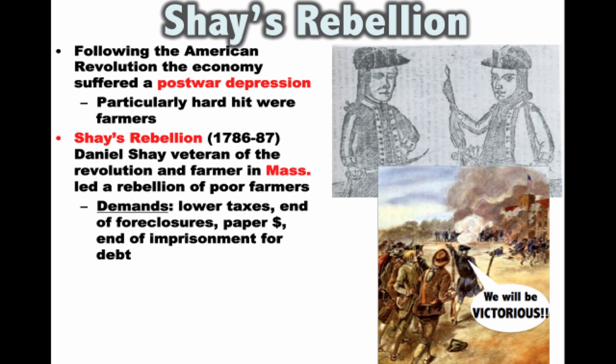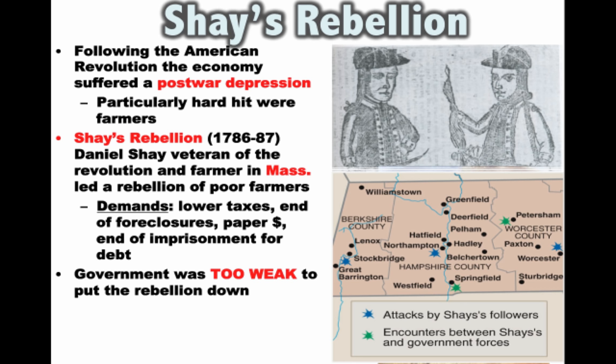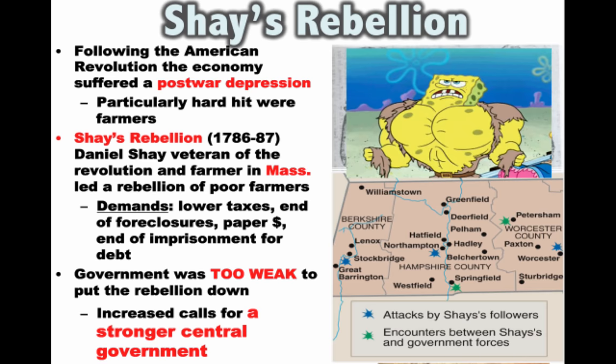When these farmers didn't get their demands met, they began to organize into mobs that stopped the collection of taxes and started closing down the courts where debtors were being put on trial. There was even a mob of farmers that tried to seize weapons from the armory. The government under the Articles of Confederation was too weak to put the rebellion down. Eventually a militia broke up the rebellion and Shays' Rebellion faded away.